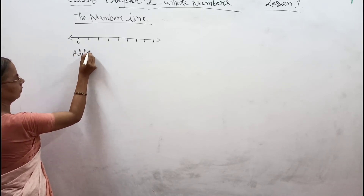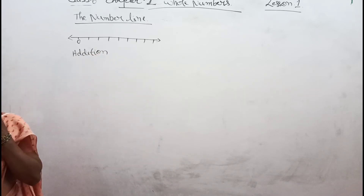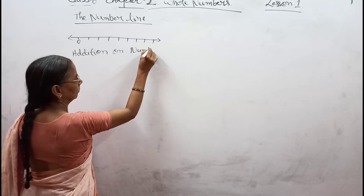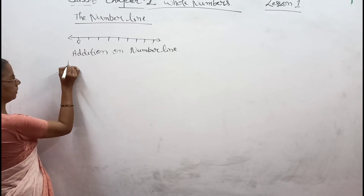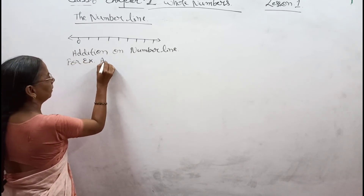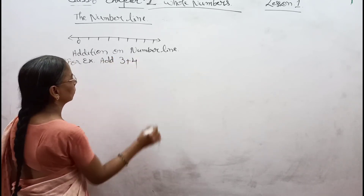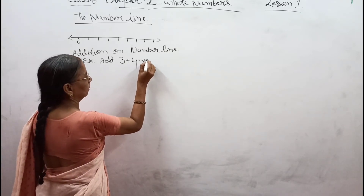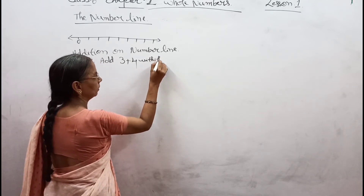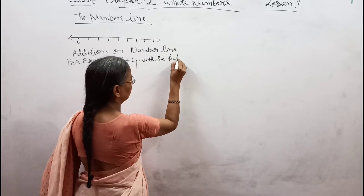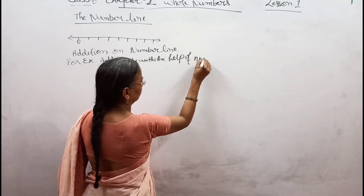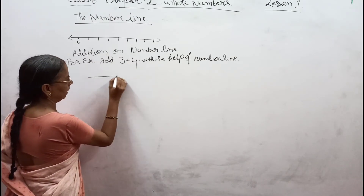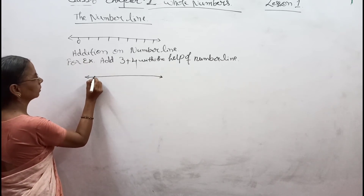Addition on number line. For example, add 3 plus 4 with the help of a number line. To do this, first we have to draw a straight line starting from 0.